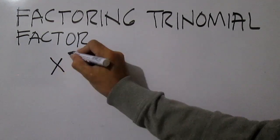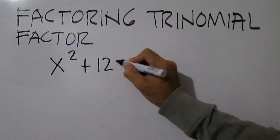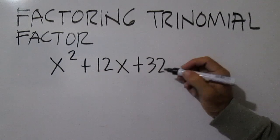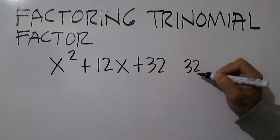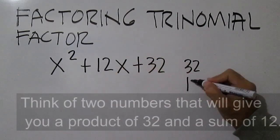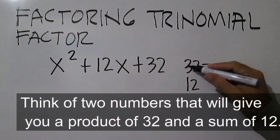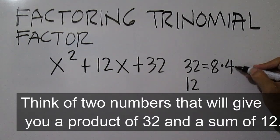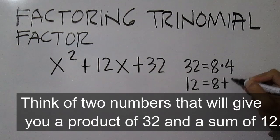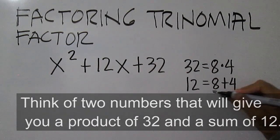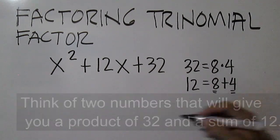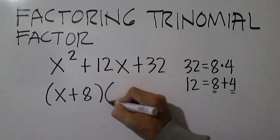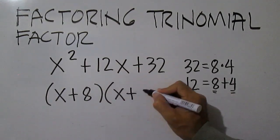Factor x squared plus 12x plus 32. Think of two numbers that will give you a product of 32 and a sum of 12. 32 is equal to 8 times 4. 12 is equal to 8 plus 4. The factors are x plus 8 and x plus 4.